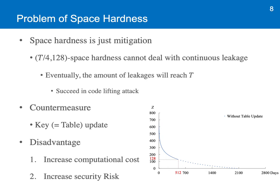However, space hardness is just mitigation of code lifting attack. Why? Because this security notion cannot deal with continuous leakage. Even if T over 4, 128 space hardness ensures some security level in the situation where one-fourth of the table is leaked, by continuously stealing the table data, the amount of stolen data will be more than T over 4, and eventually that amount will reach T, which means the adversary will succeed in code lifting attack in the end. This figure shows the relationship between time and corresponding security level z when considering the leakage of a certain amount on a daily basis. It shows that security level drops constantly to zero.